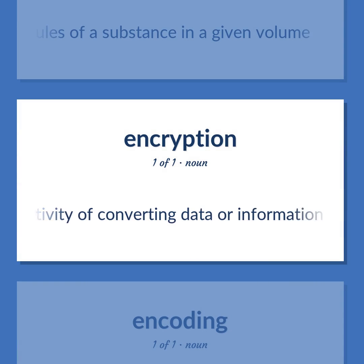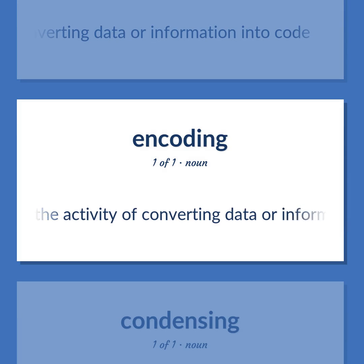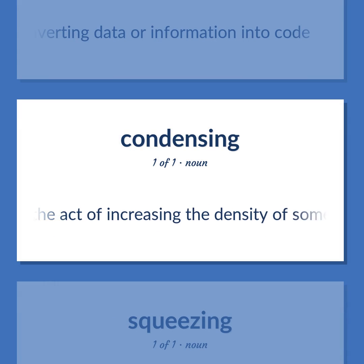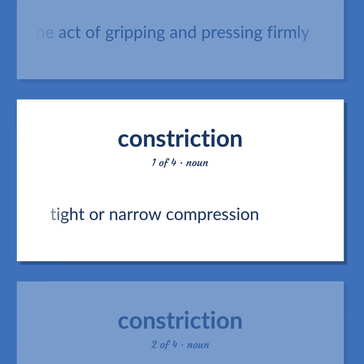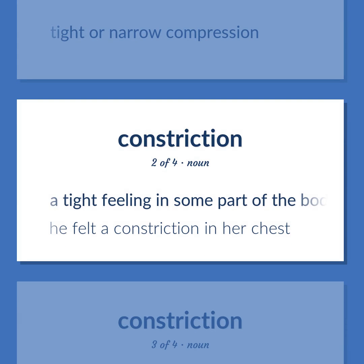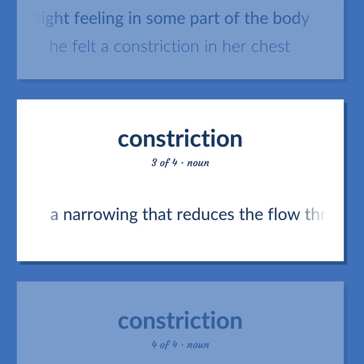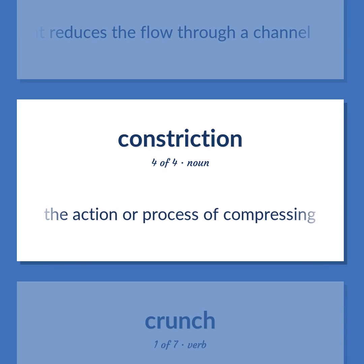Encoding. The activity of converting data or information into code. The act of increasing the density of something. The act of gripping and pressing firmly. Tight or narrow compression. A tight feeling in some part of the body — he felt a constriction in her chest. A narrowing that reduces the flow through a channel. The action or process of compressing.